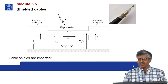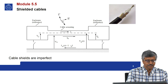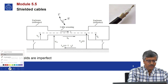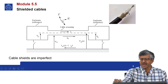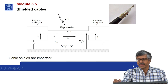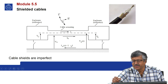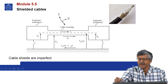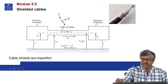Now consider this picture of the shielded cable. You can find the shield which is in the form of a braid, along with insulation, and also one more shield which is more like a solid shield, and the inner conductor. So this is one example of a shielded cable.